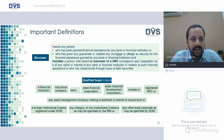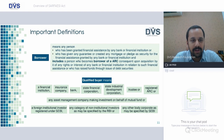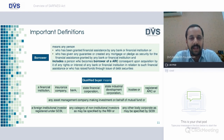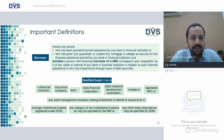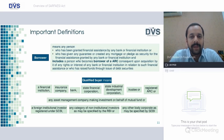What borrower means as per SARFAESI: Borrower means any person who has been granted financial assistance by any bank or financial institution, or who has given any guarantee or created any mortgage or pledge as security for the financial assistance granted by any bank or financial institution, and includes a person who becomes a borrower of ARC consequent upon acquisition by it of any right or interest from any bank or financial institution in relation to that financial assistance.